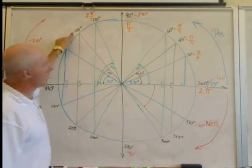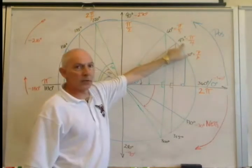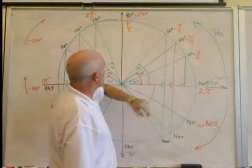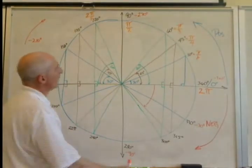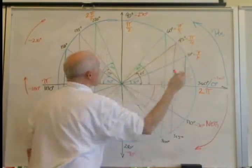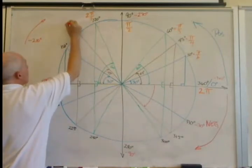135 degrees, well, that's three of these 45 degree units, 45 degrees, 90 degrees, 135, so that's 3 times pi over 4, or 3 pi over 4.